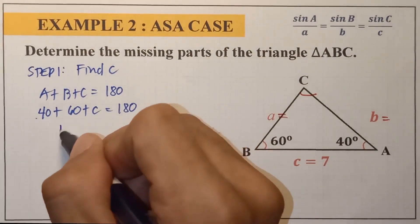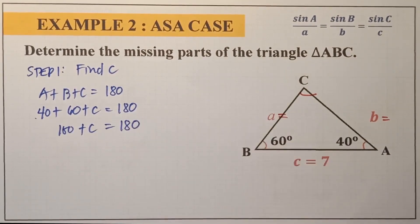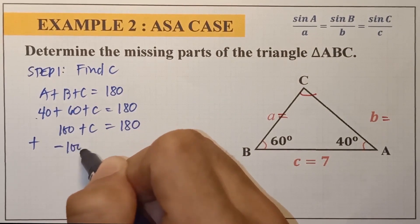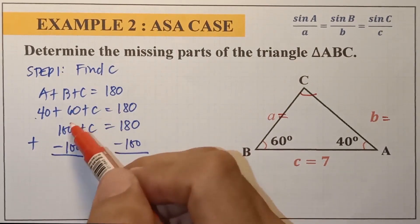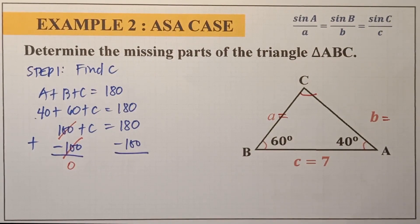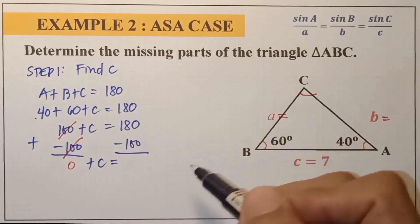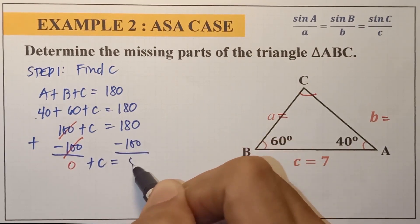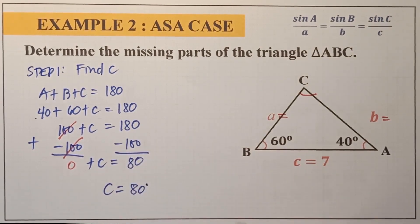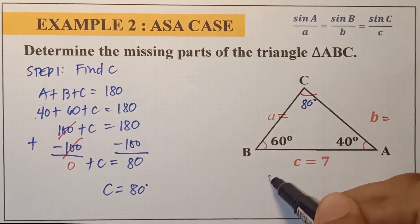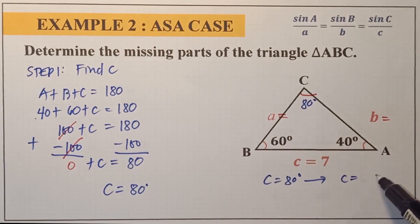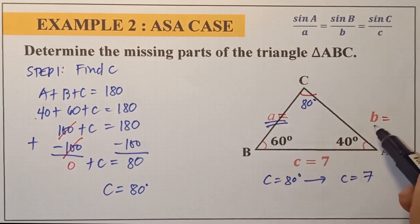Adding the two known angles: 100 plus C equals 180 degrees. Adding negative 100 to both sides, we get C equals 80 degrees. So angle C is 80 degrees. From the given information, we can identify that angle C is 80 degrees and its opposite side is 7. We can now find sides a and b.